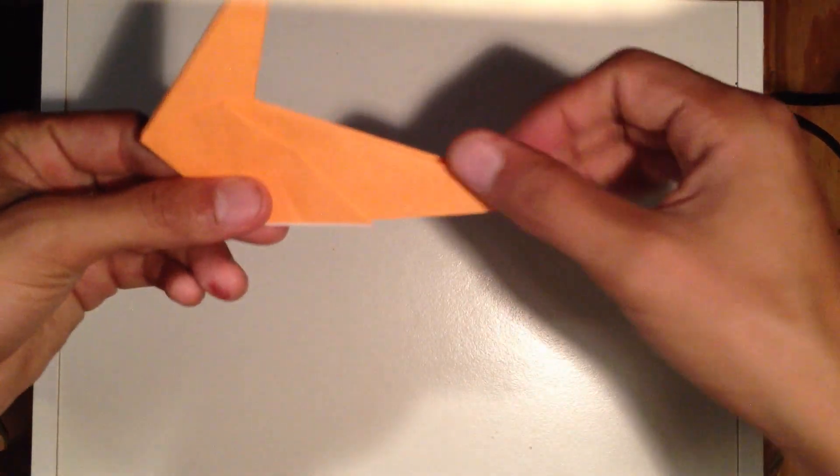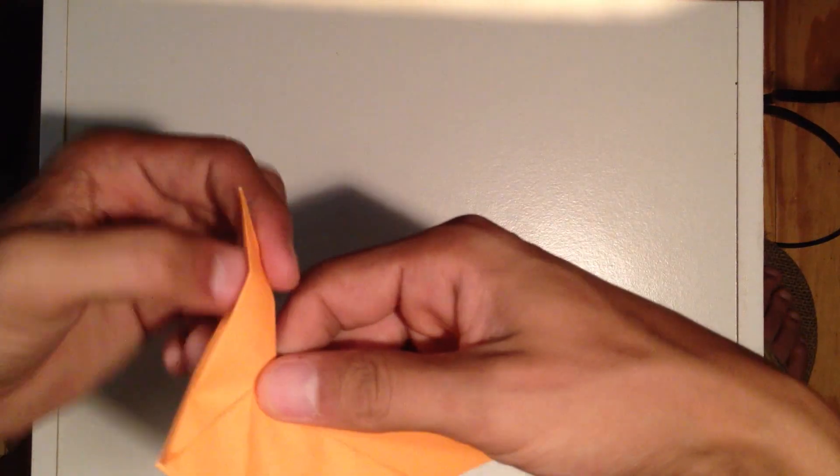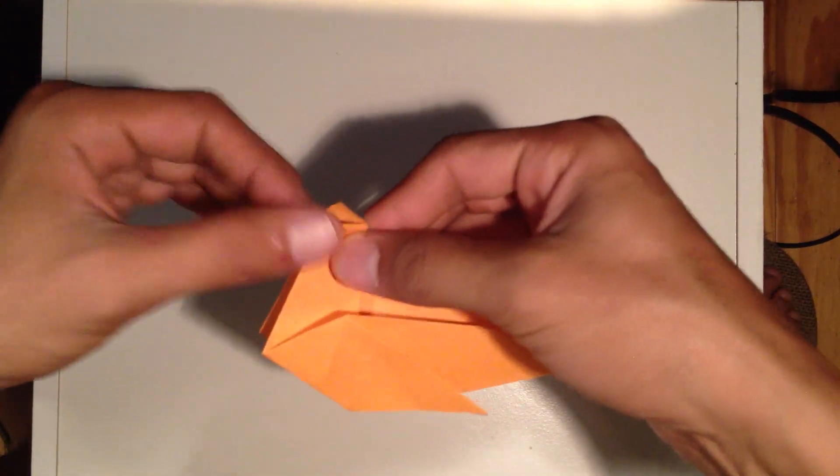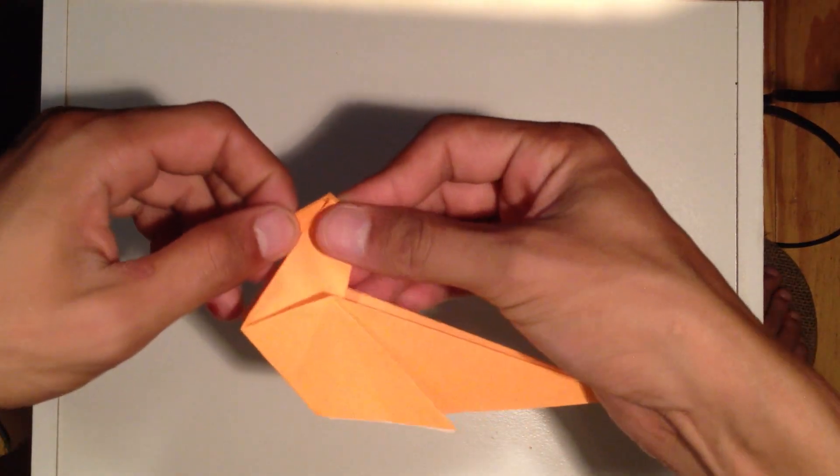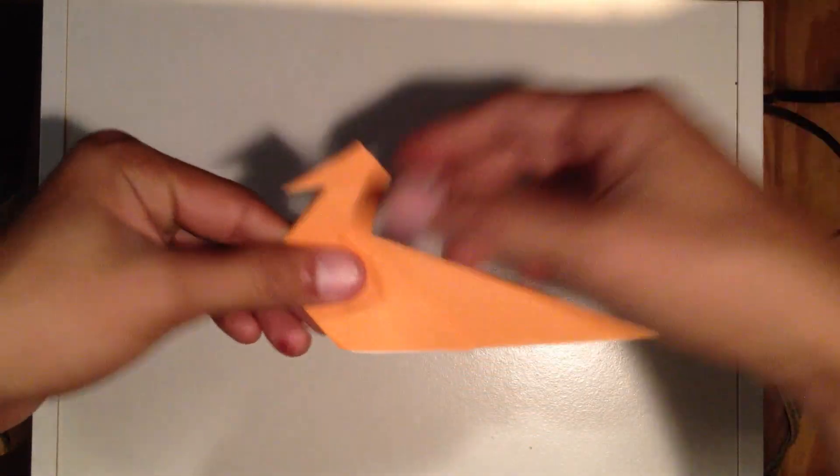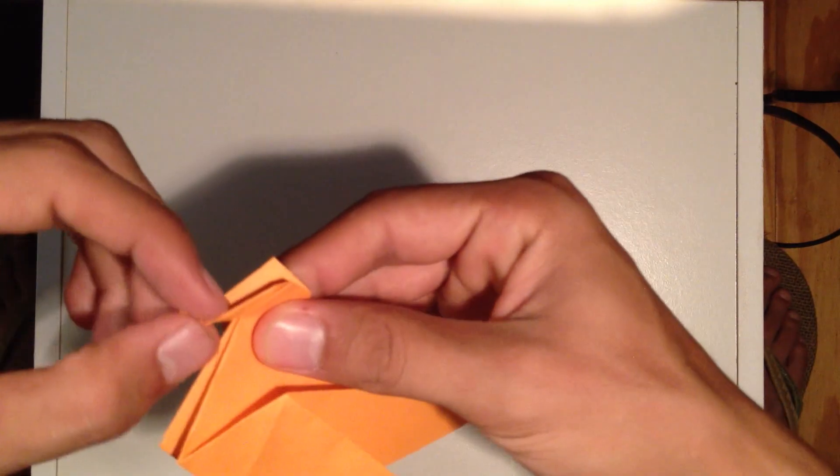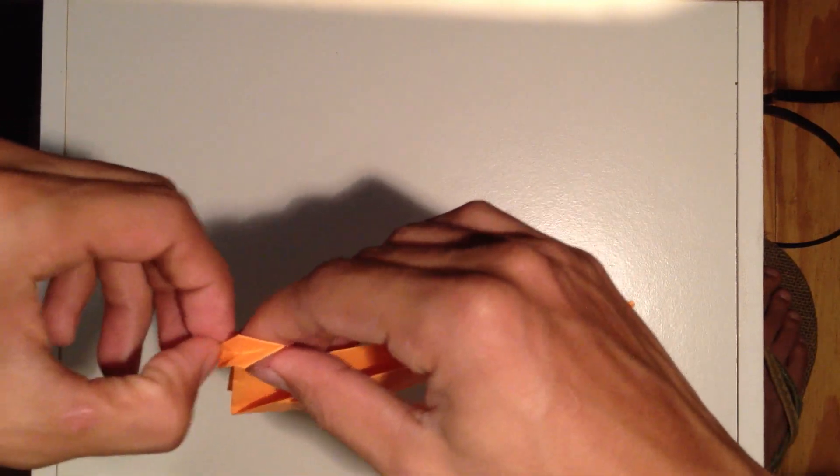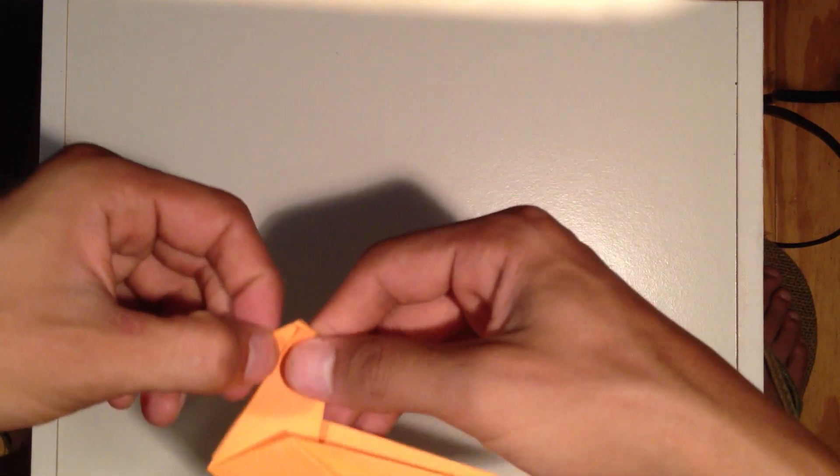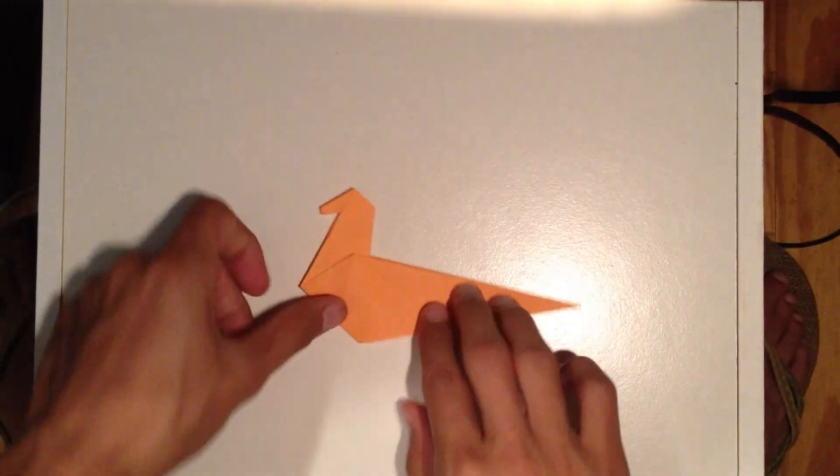Now we're left with kind of a swan-looking structure. Now we're going to pop this down to form the head. Because we're making a horse, not a crane or a swan, we're going to kind of flatten out the nose here, or the beak, or whatever you want to call it. Now we're left with this.